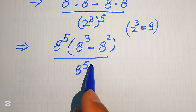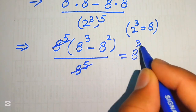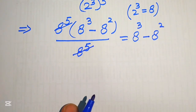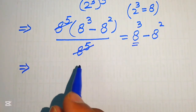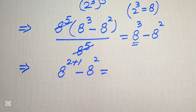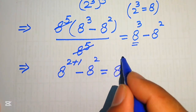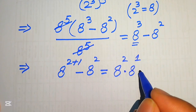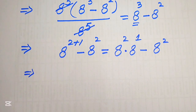Now this 8 to the power of 5 in the numerator is cancelled by 8 to the power of 5 in the denominator, and we are left with 8 cubed minus 8 squared. We again break the exponent of 8 cubed, writing it as 8 to the power of 2 plus 1, minus 8 squared. We then apply the exponent law again and write it as 8 squared multiplied by 8 to the power of 1, minus 8 squared. Since the calculator is not allowed, I will give a full step-by-step solution.